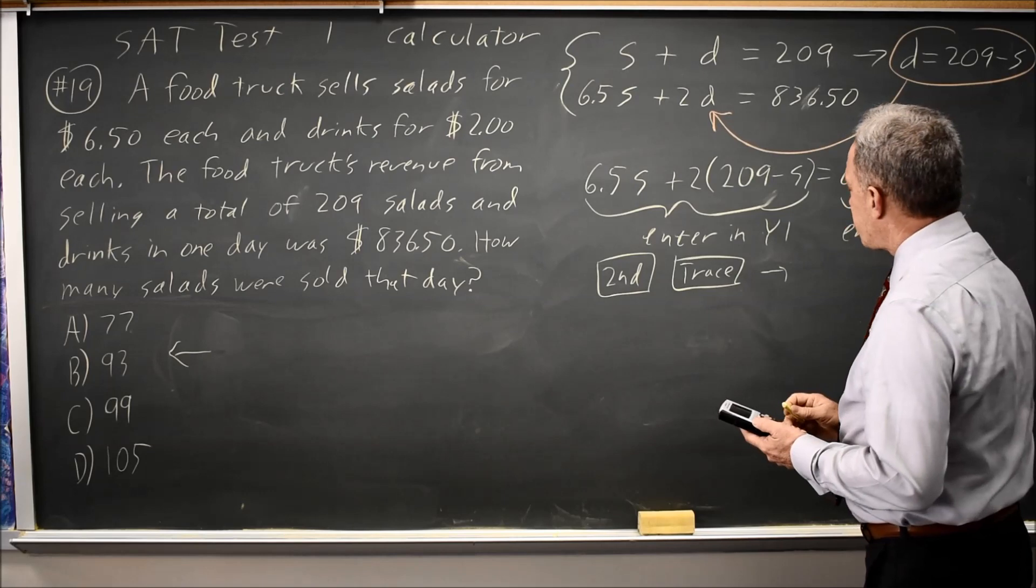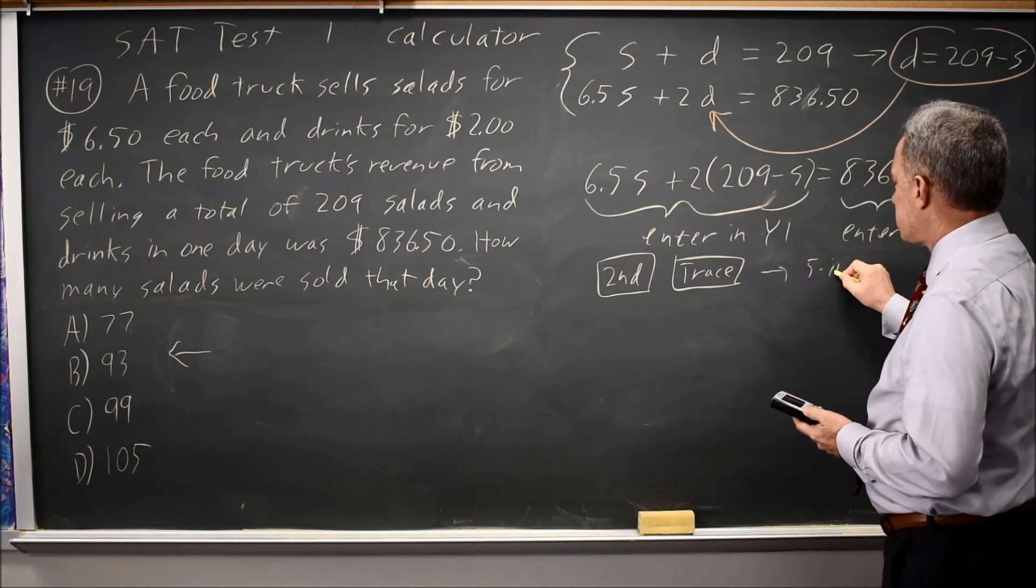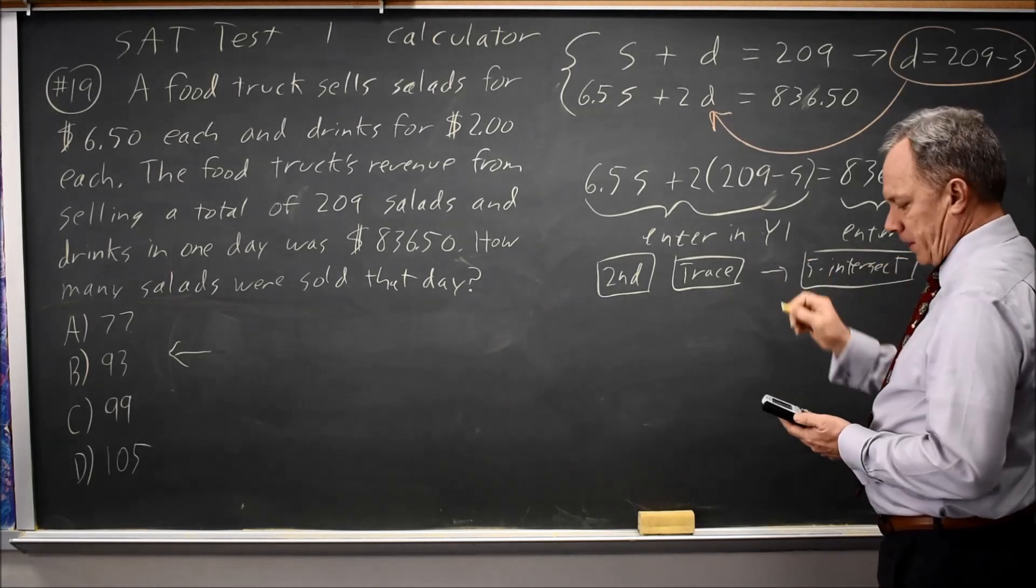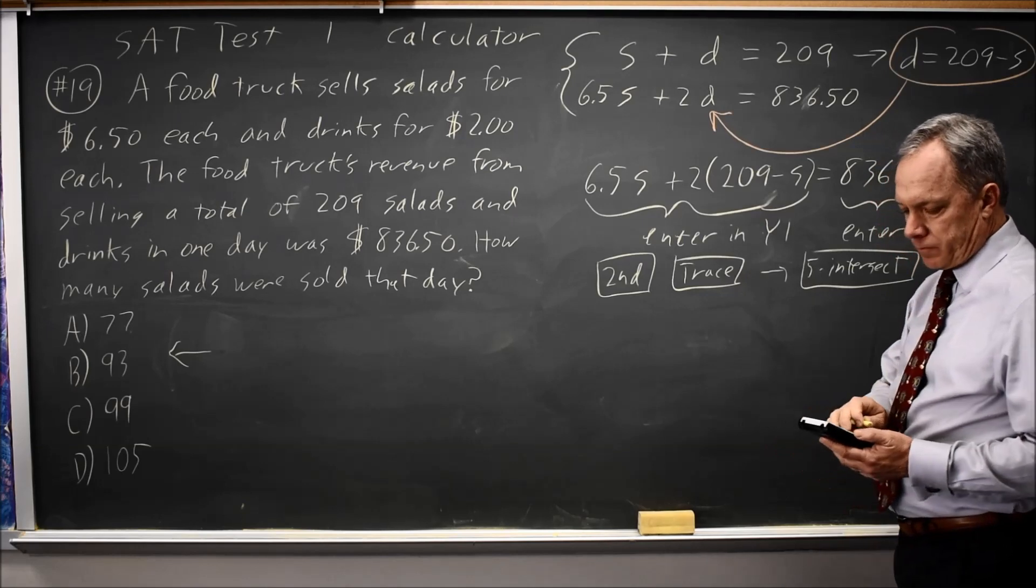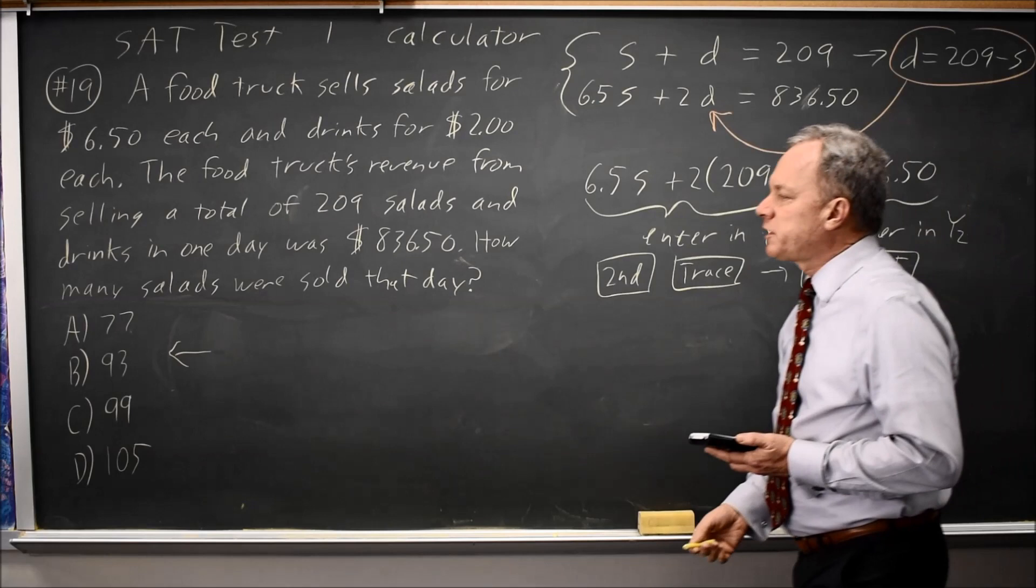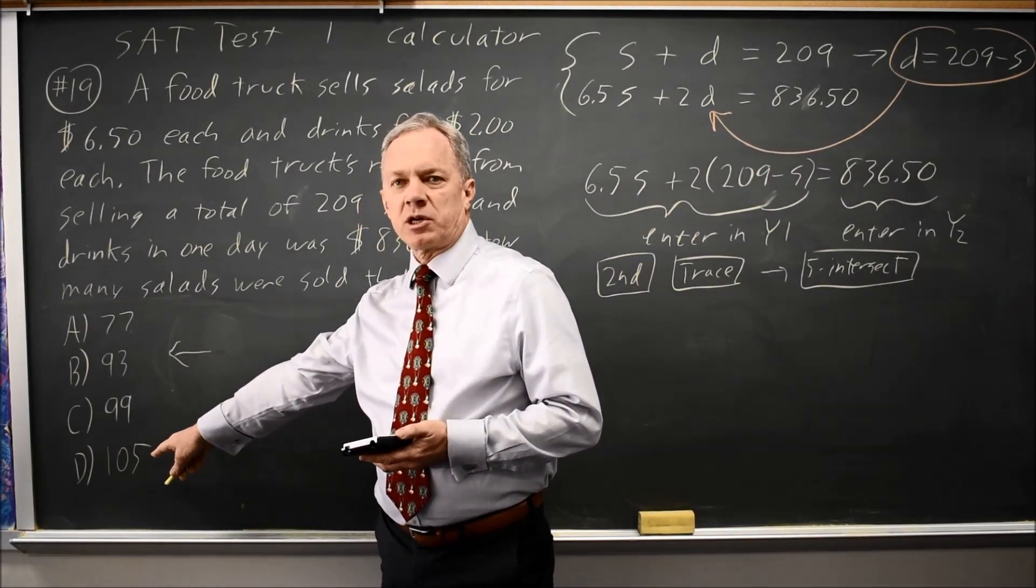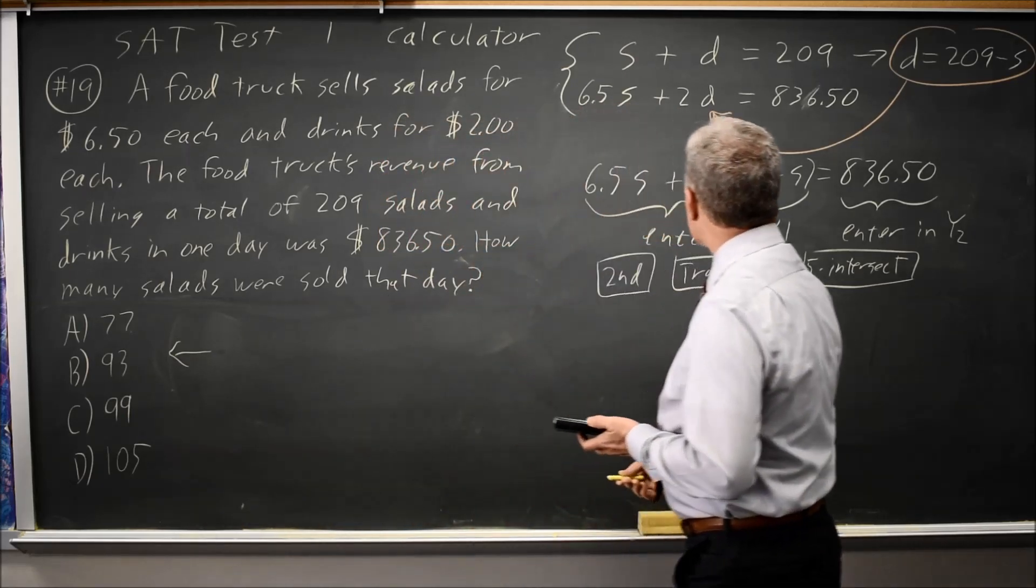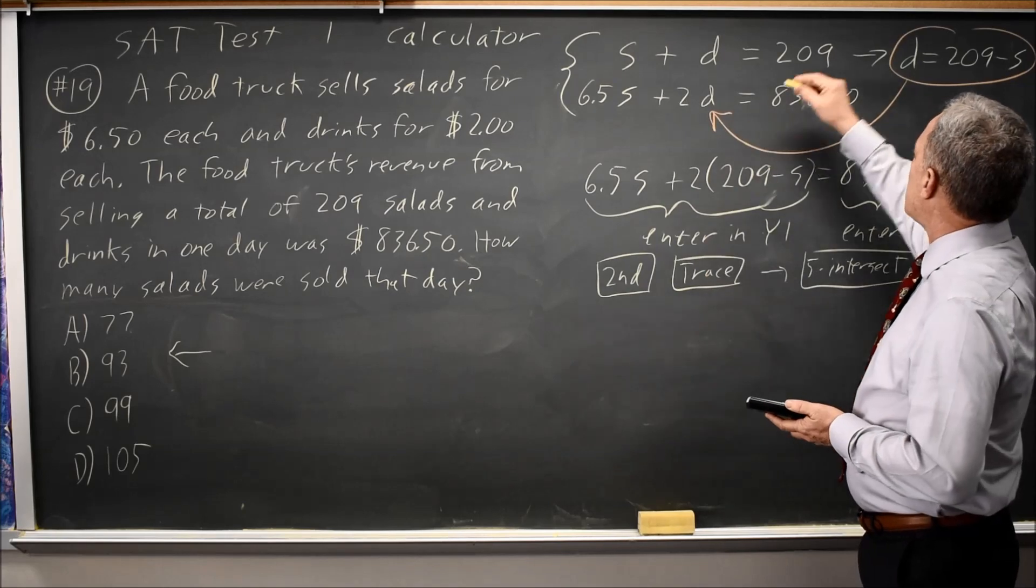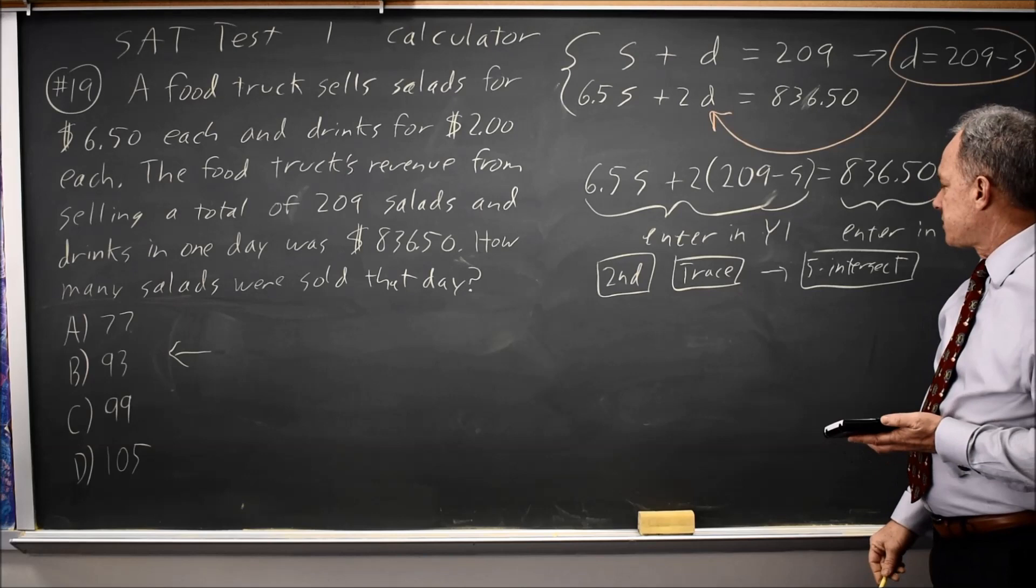And then choice 5 is intersect. And if I've chosen an X window that includes all possible answers, so my X max has to be bigger than 105, I use 200. If I want to see the intersection, which I usually like to do, I know that I want Y max bigger than 836.50, so I chose 1,000.